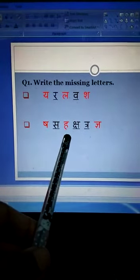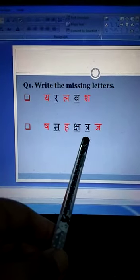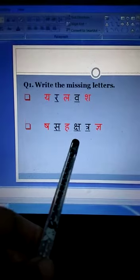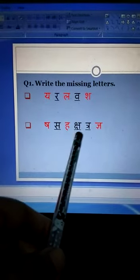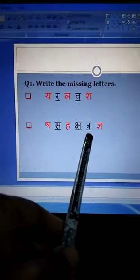Then ha, cha, tra, gyan. This is after ha. Cha, missing letters, and tra.